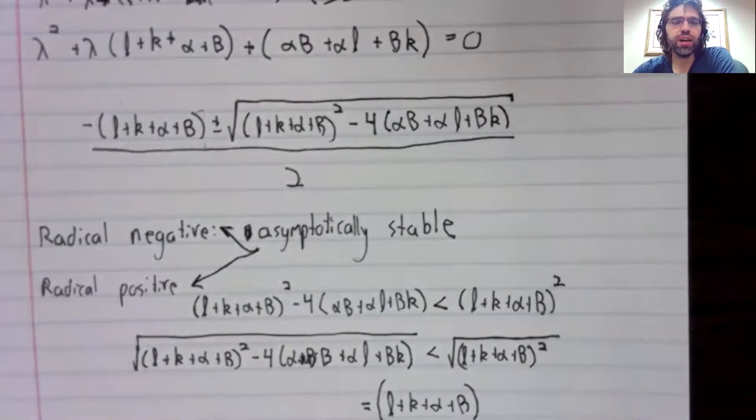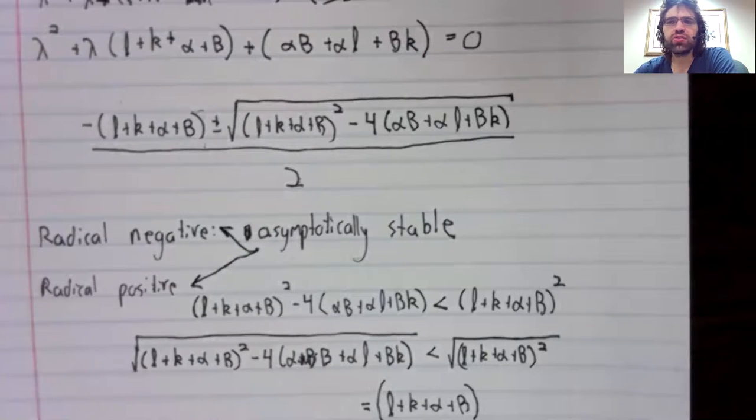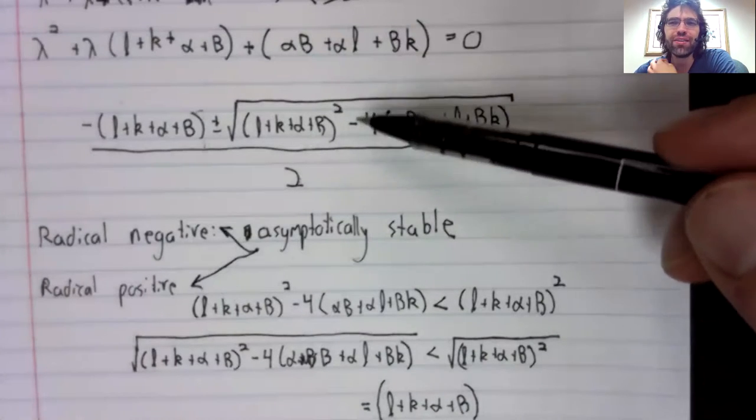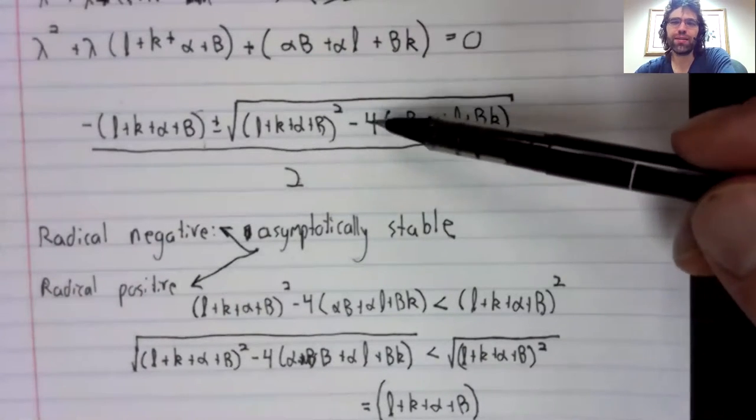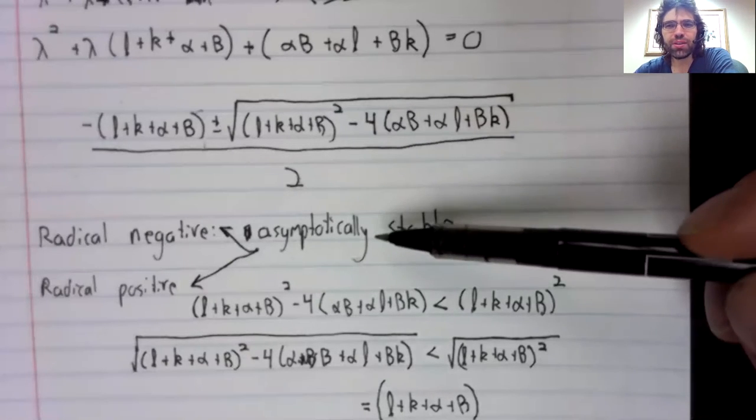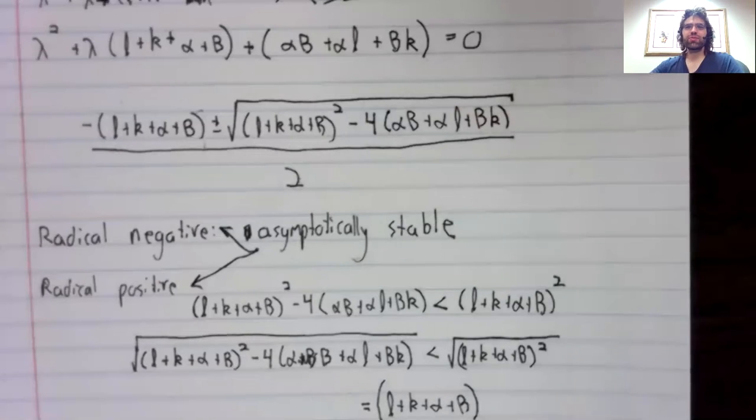Negative eigenvalues mean asymptotic stability. There are sub-cases—is it a node, a proper node, an improper node? I'm certainly not going to try to find the eigenvectors associated with this. Can you imagine doing that? I'm happy with the observation that the fixed point is asymptotically stable.